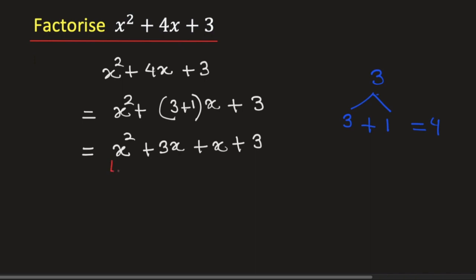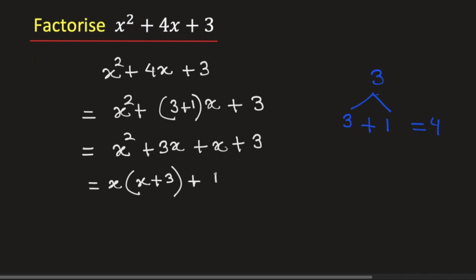From the first two terms we will take x common, giving us x times x plus 3. In the next two terms there is no common term, so we take 1 as common and we have 1 times x plus 3.